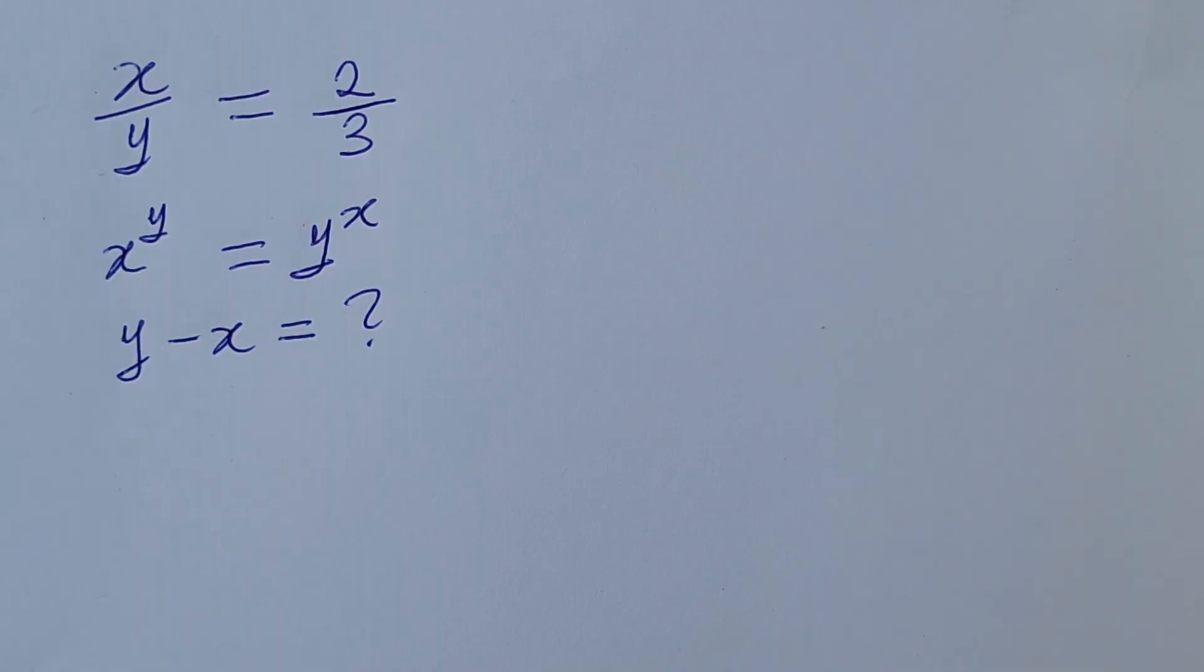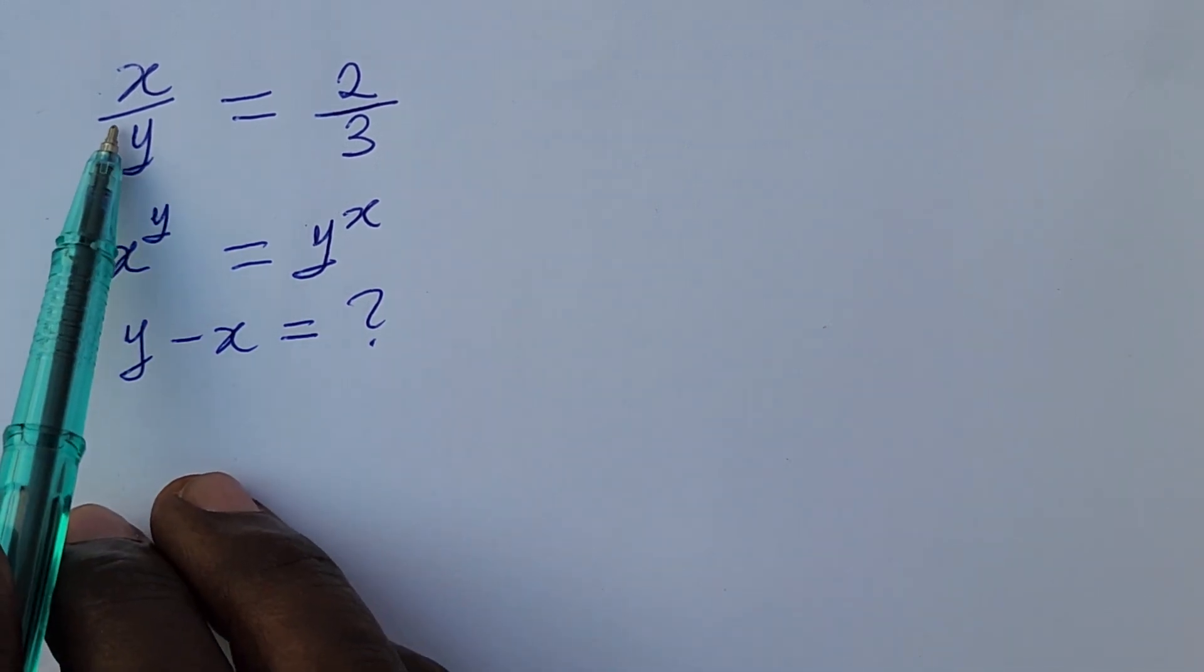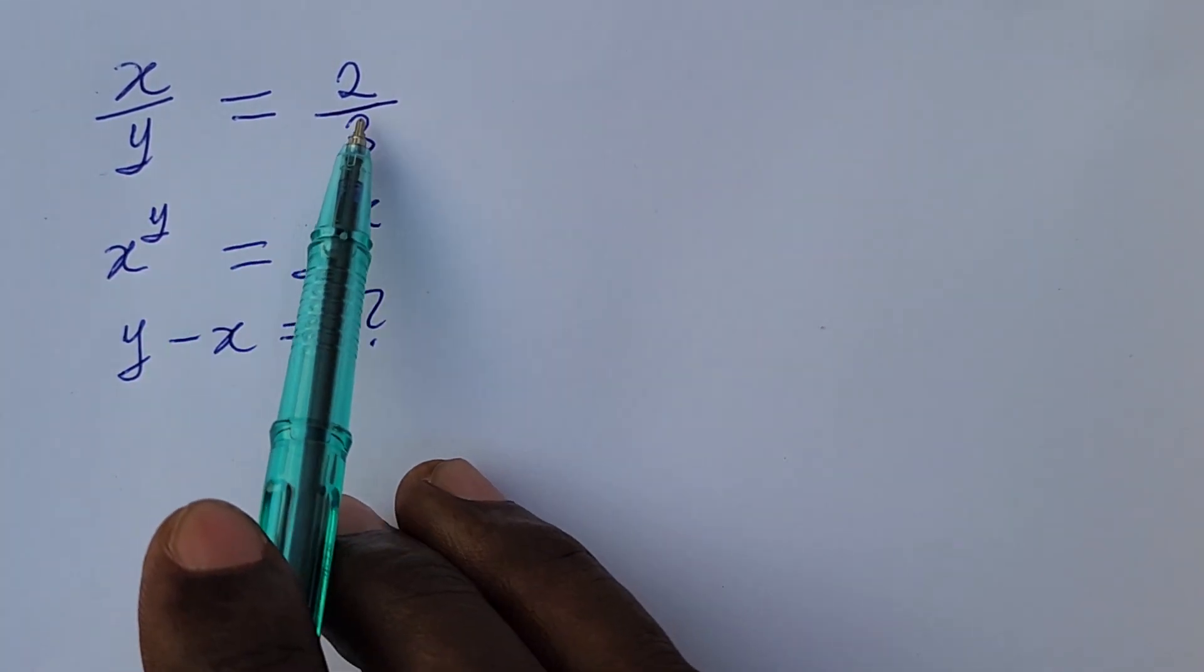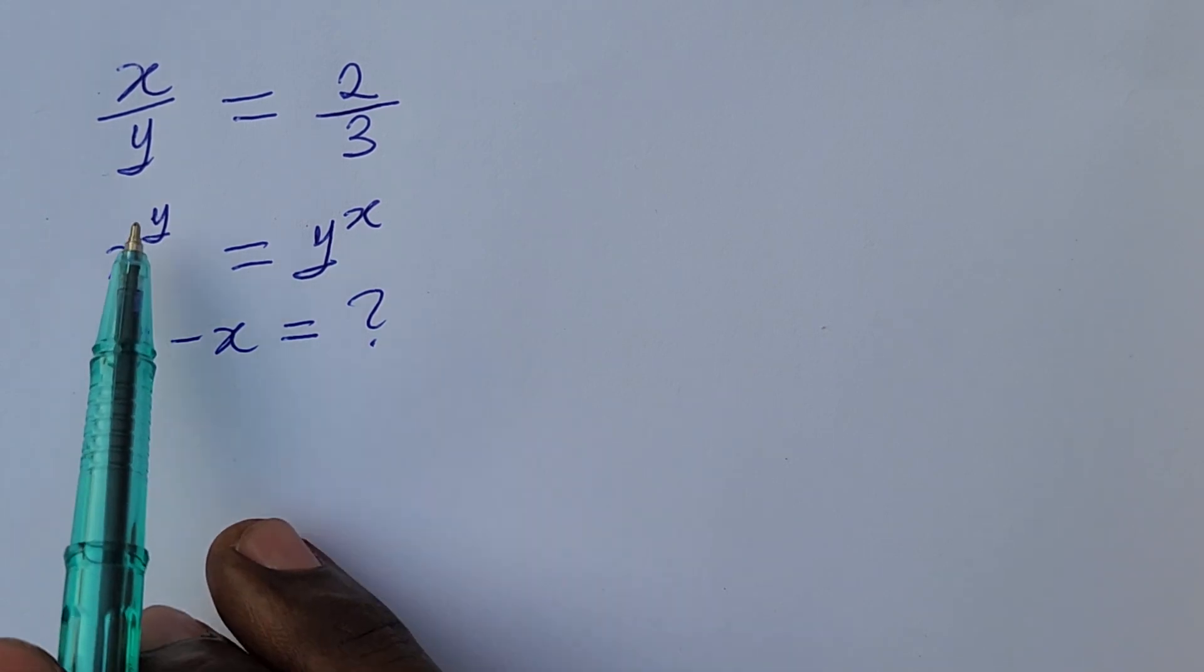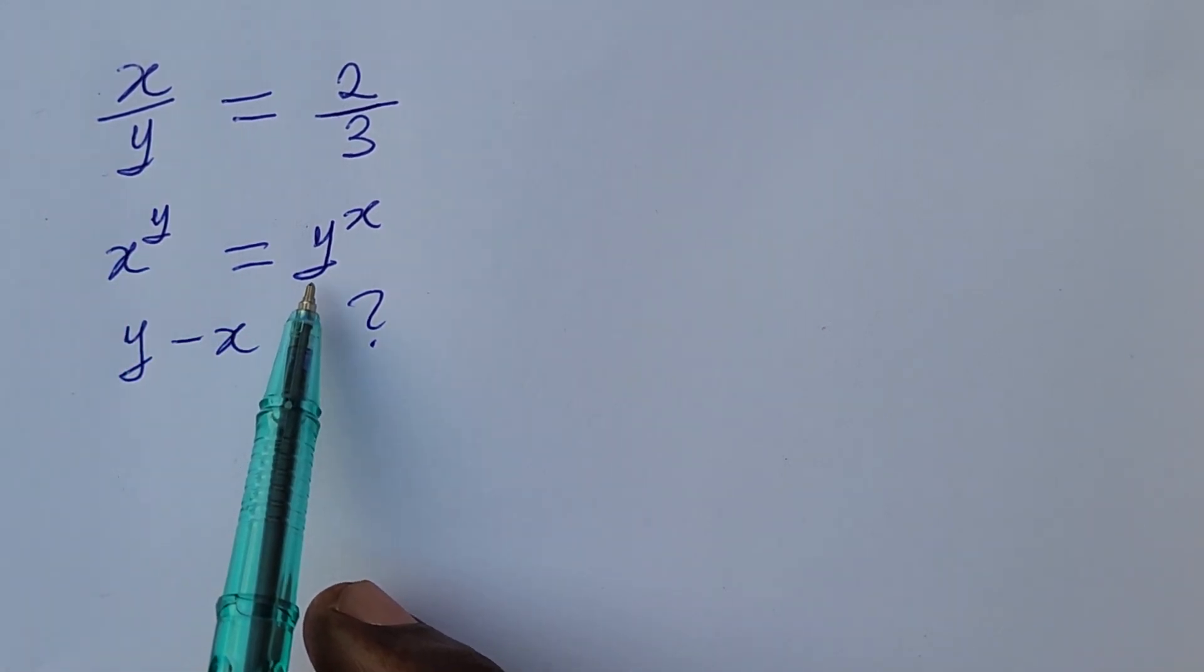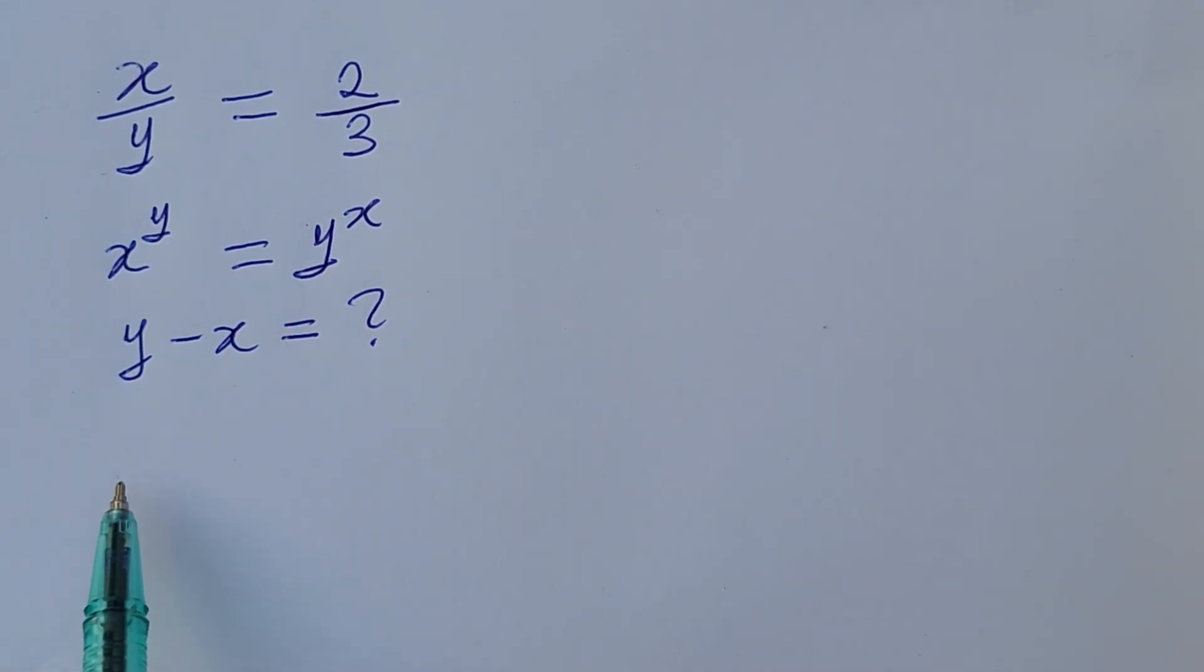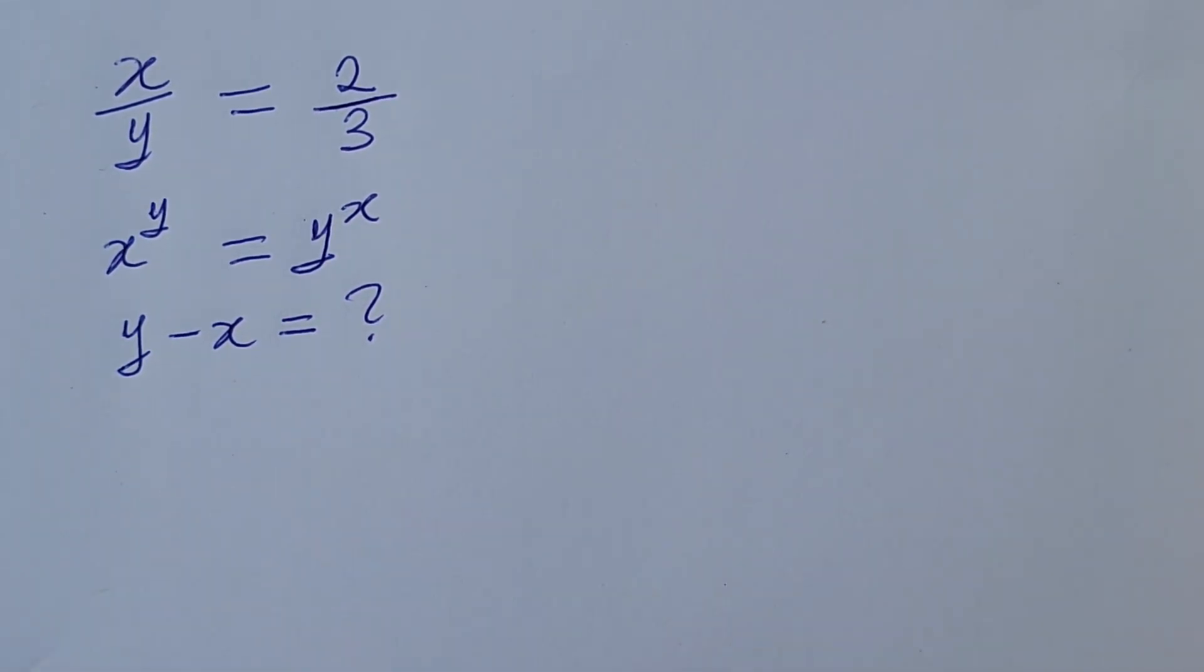Welcome to today's challenge. Here we have a math problem before us. The question is x over y equals 2 over 3. At the same time we're given that x to the power of y equals y to the power of x. What will be the value of y minus x?